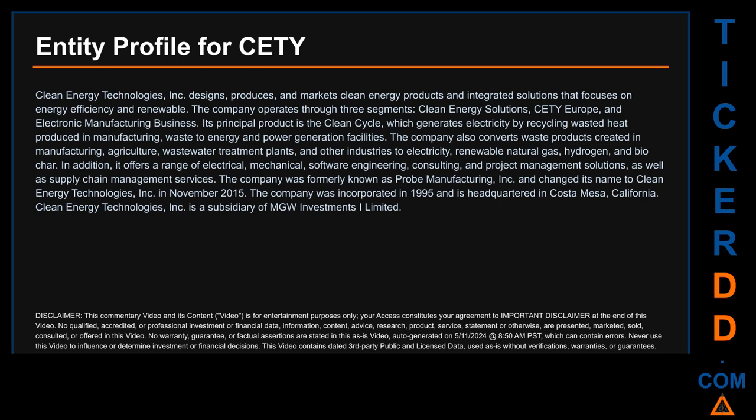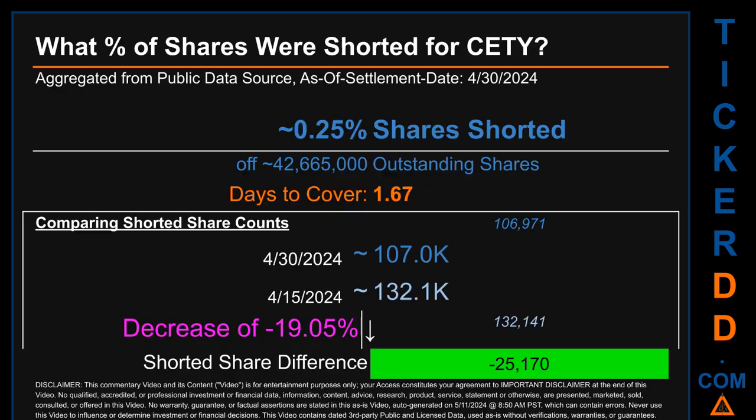The company was incorporated in 1995 and is headquartered in Costa Mesa, California. Clean Energy Technologies Inc is a subsidiary of MGW Investments I Limited. What percentage of shares were shorted for CETY?